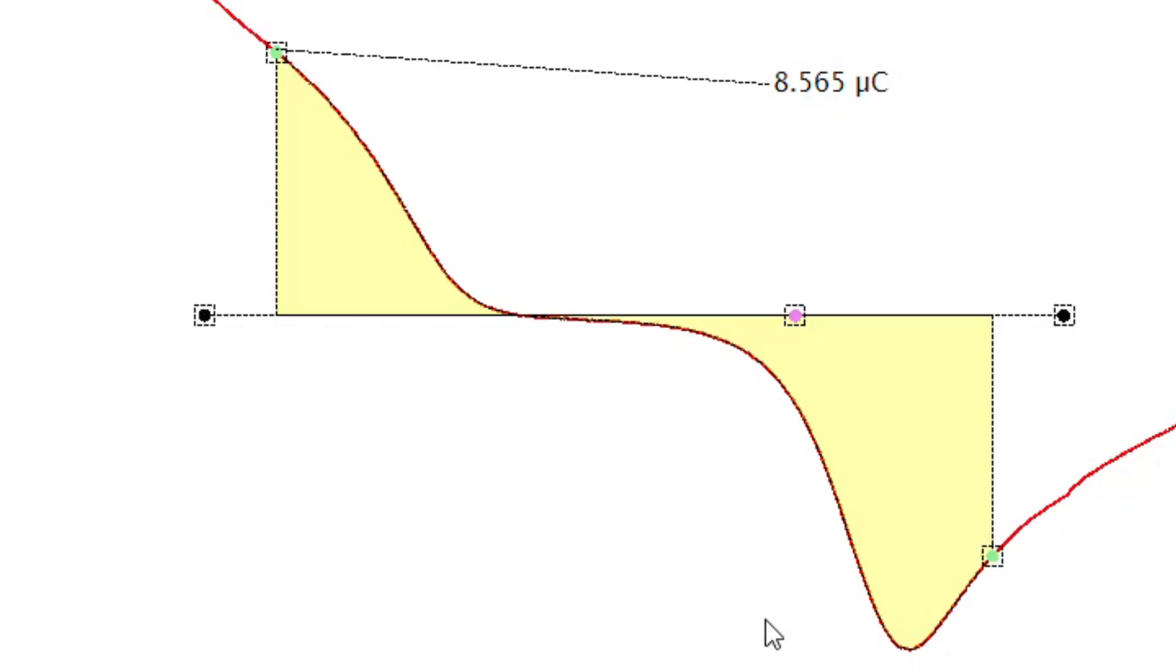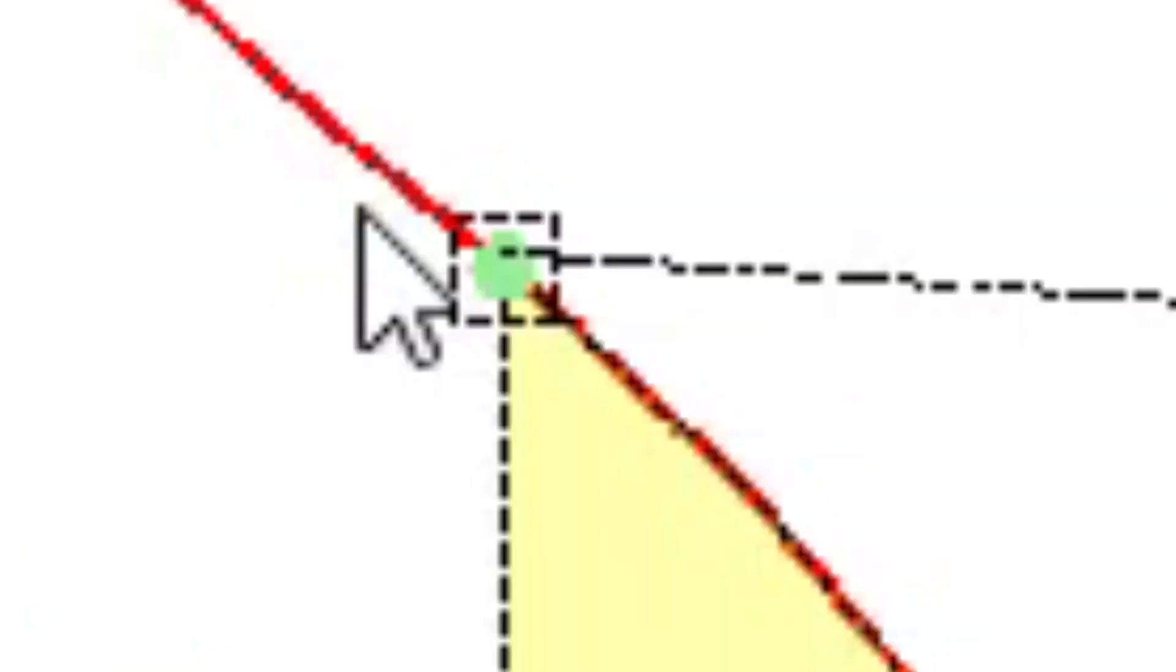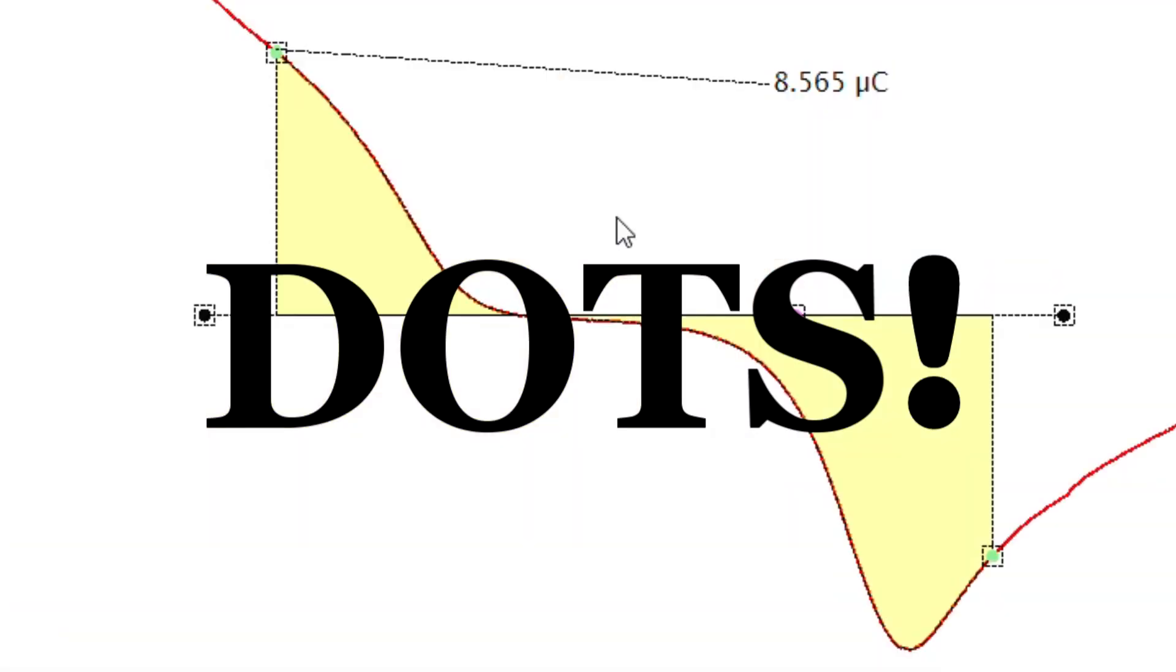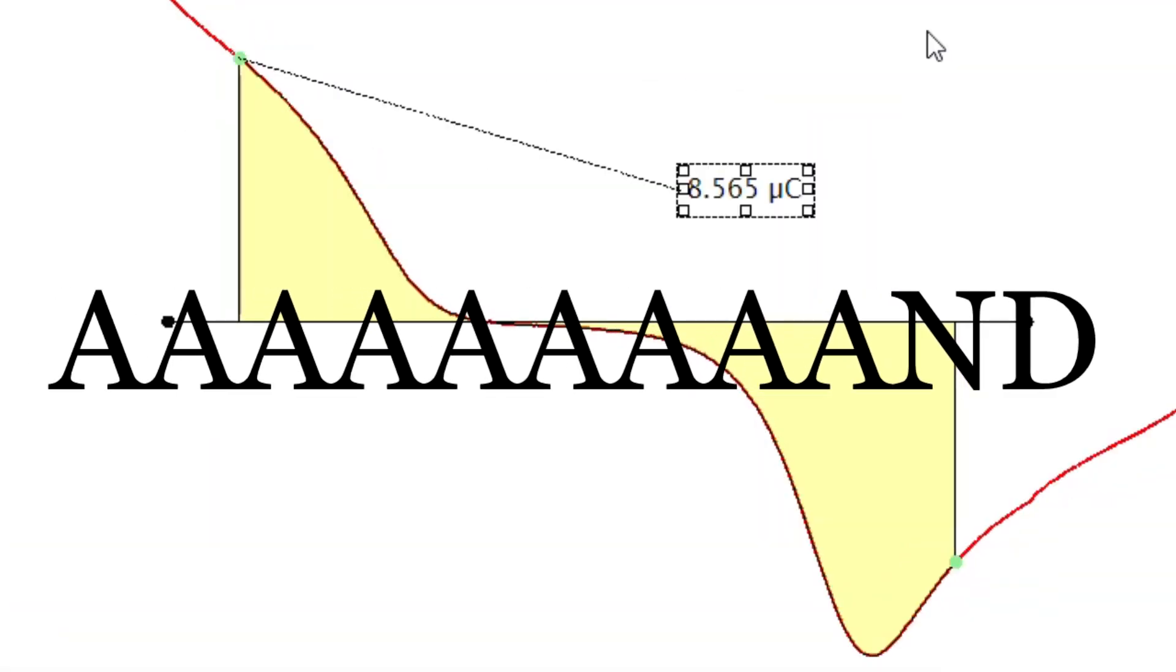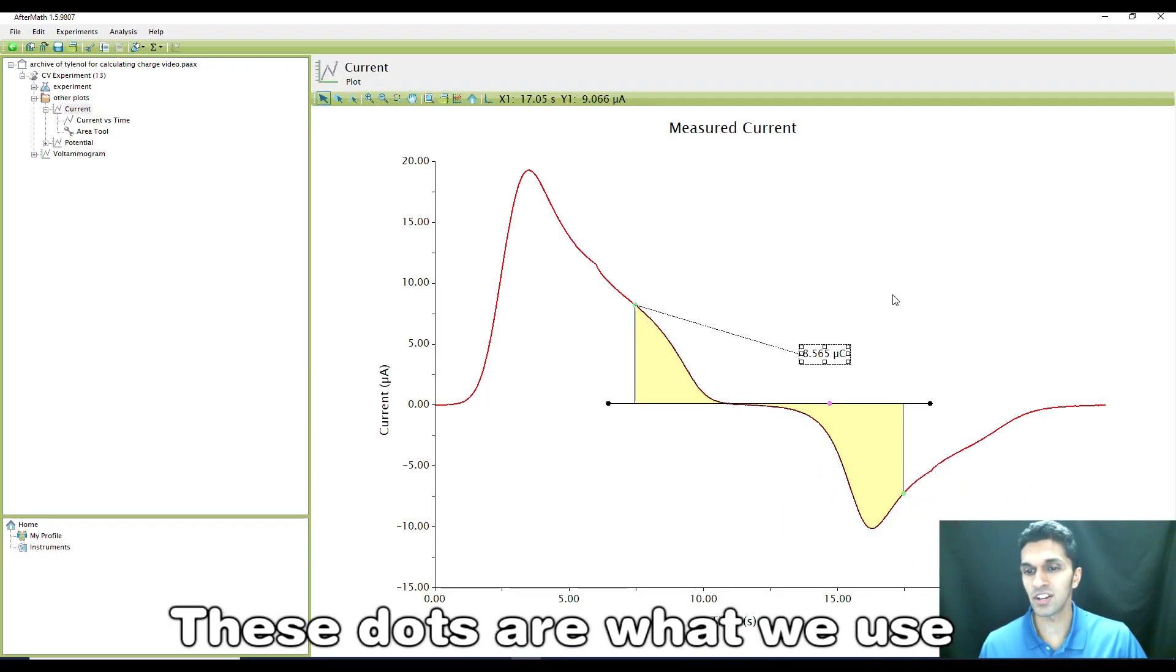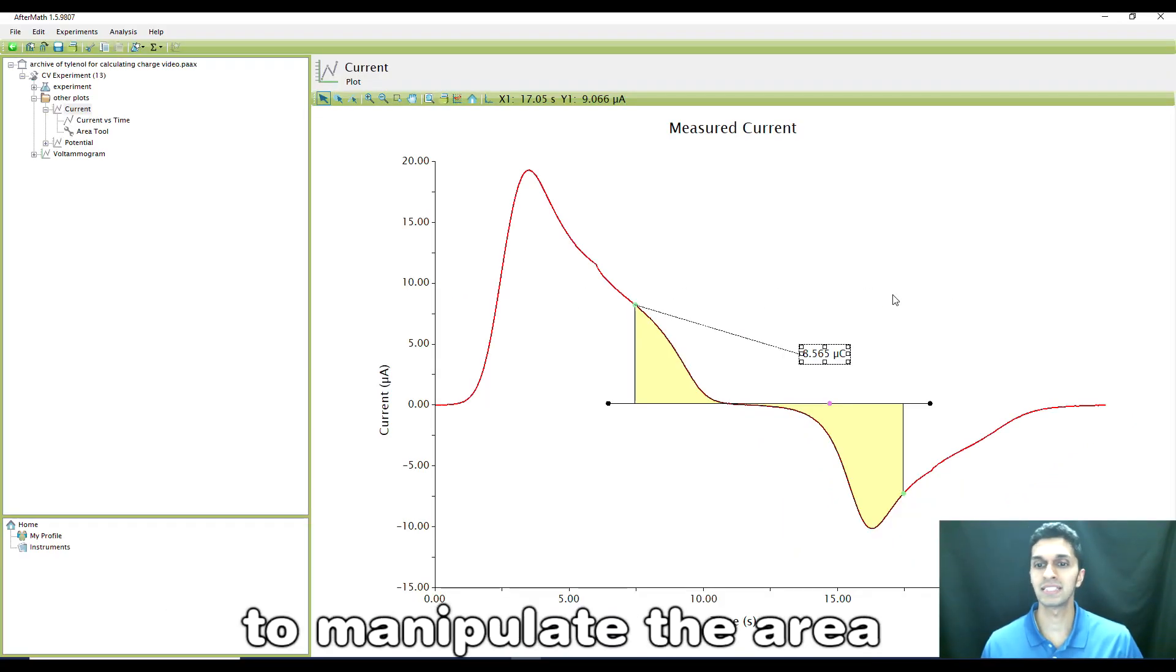And then boom! We got dots - black dots, pink dot, two green dots. These dots are what we use to manipulate the area.